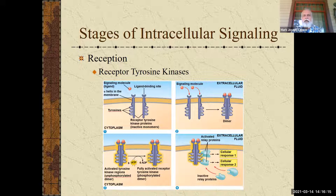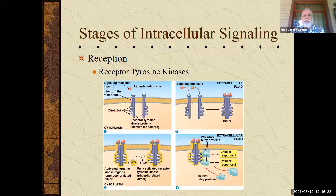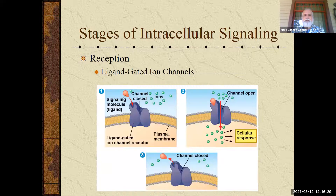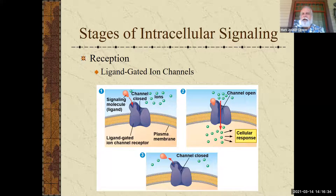For example, this type of receptor tyrosine kinase signaling kicks in to help us grow, which would be a good example of this type of reception. The third type is a little bit easier and more well known — that's ligand-gated ion channels.